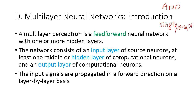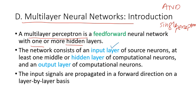In this video we will discuss the multi-layer neural network. A multi-layer neural network is a multi-layer perceptron and it involves one or more hidden layers. The network consists of an input layer of source neurons, at least one middle or hidden layer of computational neurons, and one output layer of computational neurons.